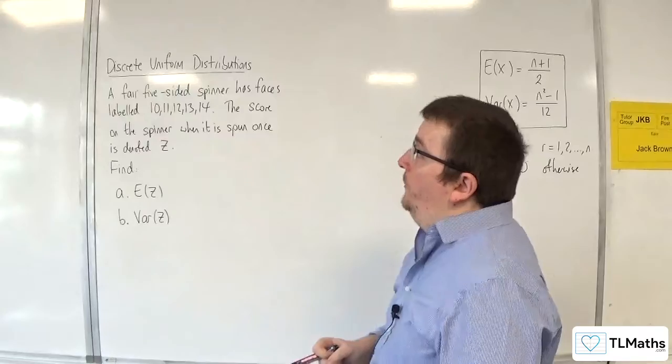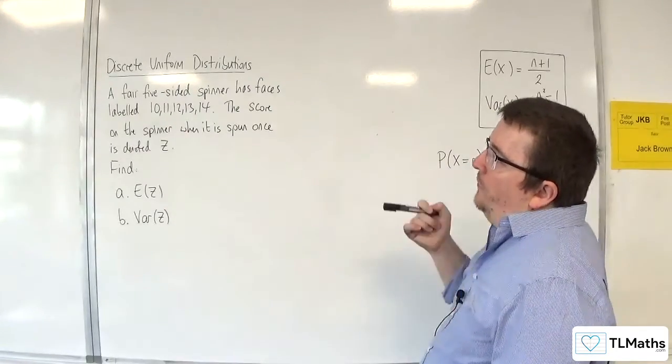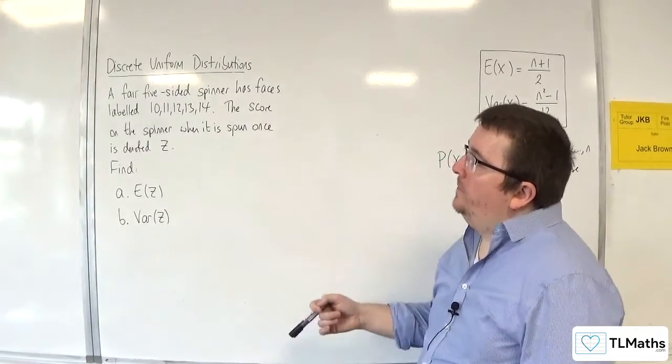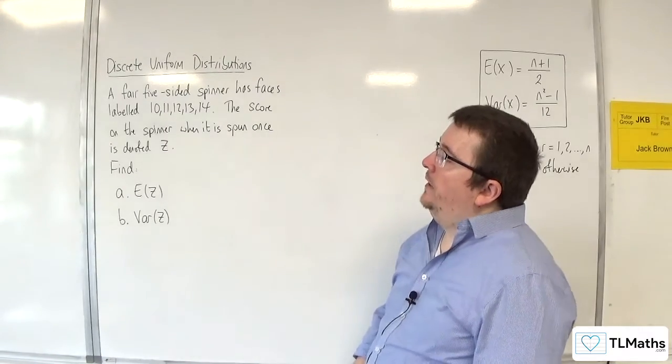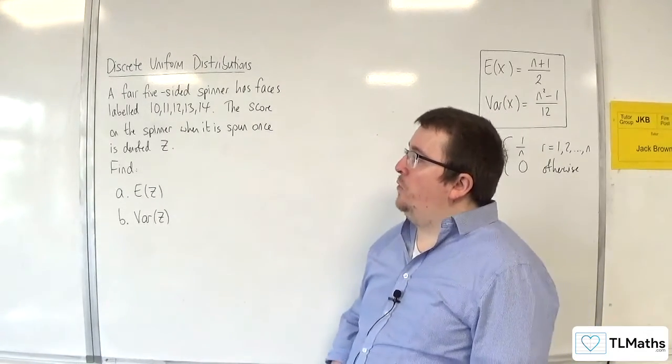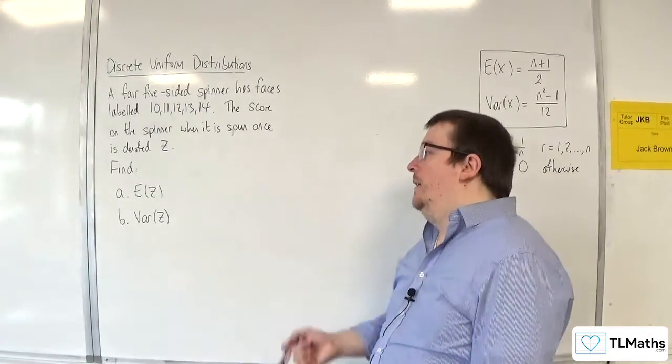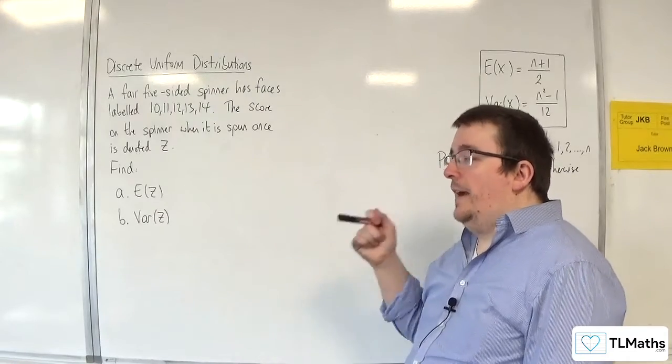In this video, I've changed the problem slightly. We've now got a fair five-sided spinner with faces labeled 10, 11, 12, 13, and 14. The score on the spinner, when it is spun once, is denoted z. Find E of z and var of z.